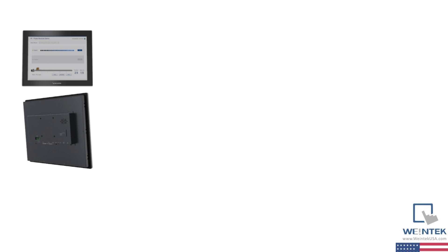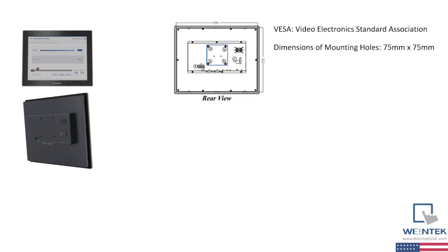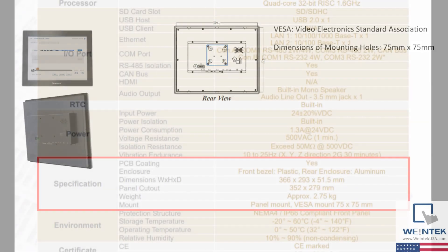Next up are the dimensions and panel cutout. The dimensions are straightforward — the maximum width, height, and depth. The cutout dimensions are used to give the recommended width and height for a cutout to ensure the rubber gasket has the highest effectiveness. The VESA, or Video Electronics Standards Association, mount dimensions give the horizontal and vertical distance of the mounting holes.